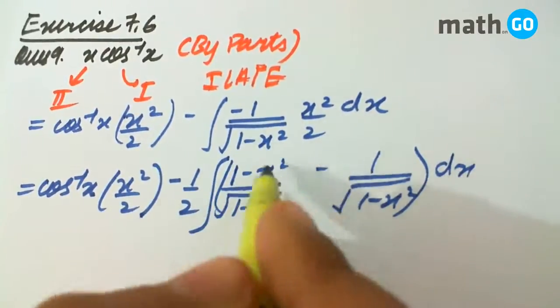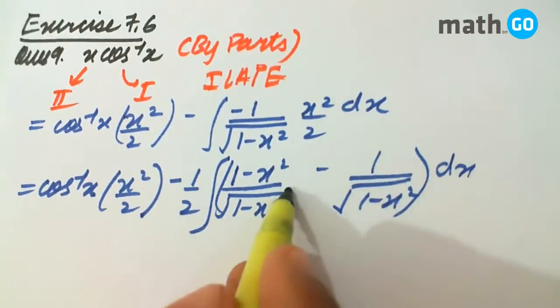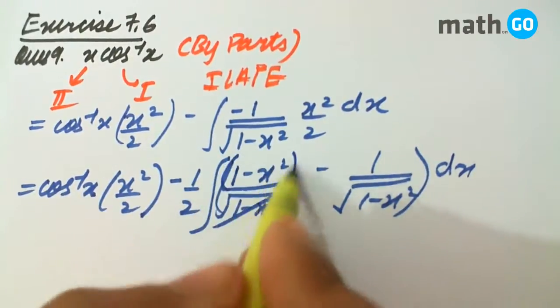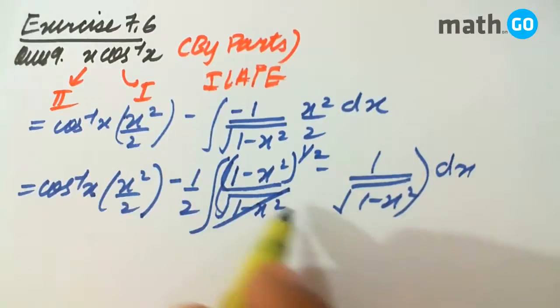This is the only way to solve this. Now, this cancels to give this iski power 1 by 2. Ab iska integration kareenge, simple formula lagake.